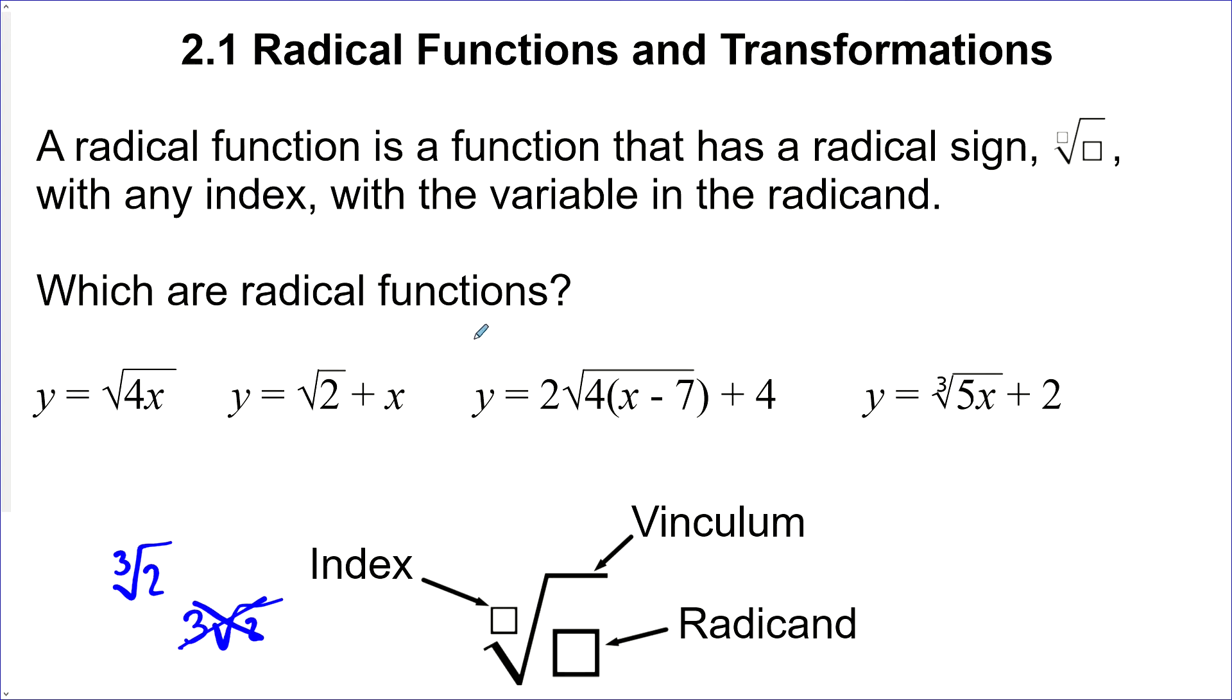Now, which are radical functions? This one. We've got a variable in the radicand. This one is not. Although it has a radical, the variable isn't in here. This is actually linear with a slope of 1 and a y-intercept of root 2. This one, yes. And this one, yeah.